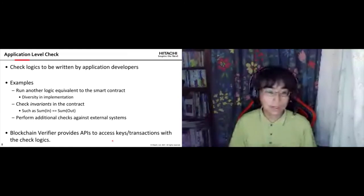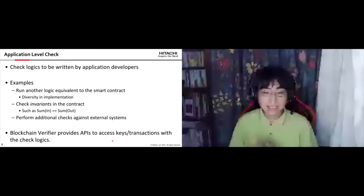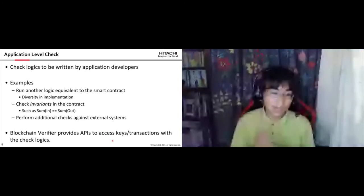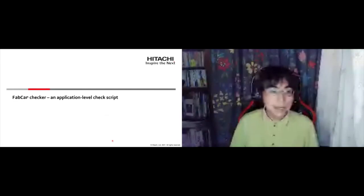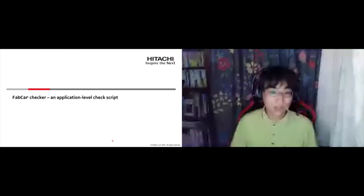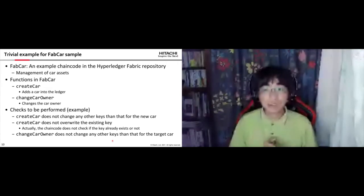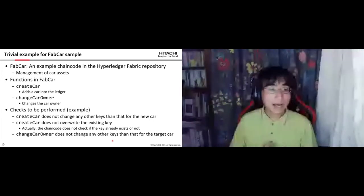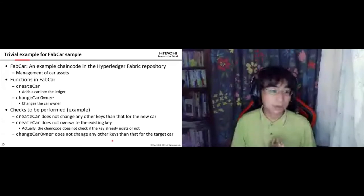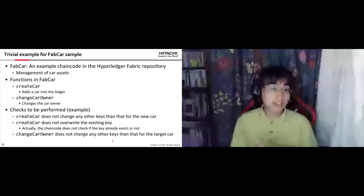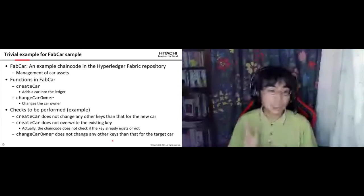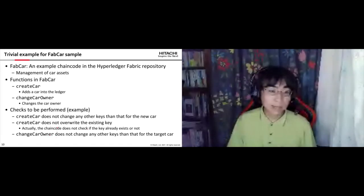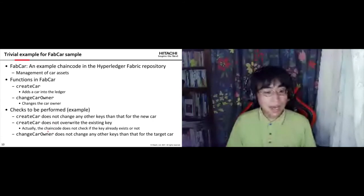Another example is performing additional checks against external systems. The Blockchain Verifier provides APIs to access keys and transactions within the check logic, so developers can write this kind of check. I will show an example application-level checker for the FabCar smart contract. FabCar is an example chaincode in the Hyperledger Fabric repository used to manage car assets, with two main functions: create car, which adds a car to the ledger, and change car owner.